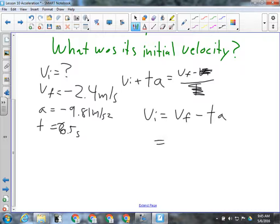So when we plug in our numbers here, we were told that vf was 2.4 meters per second down, so that's negative, minus the time, 6.5, times the acceleration, negative 9.81 meters per second squared. You don't have to put the units in for there.